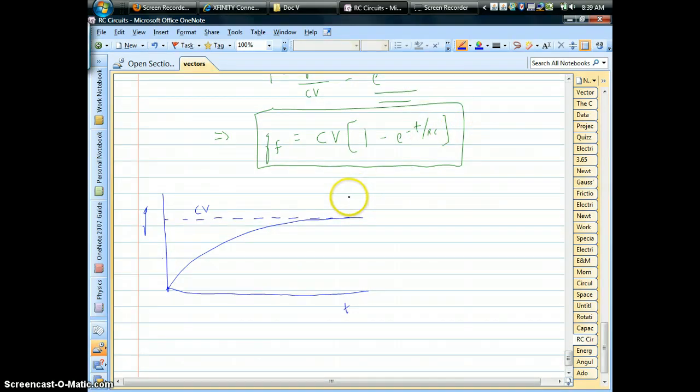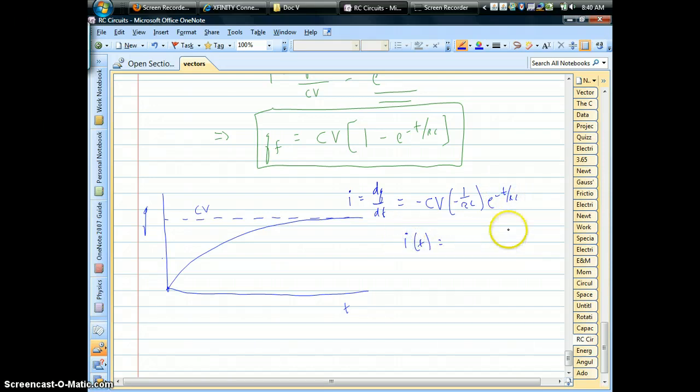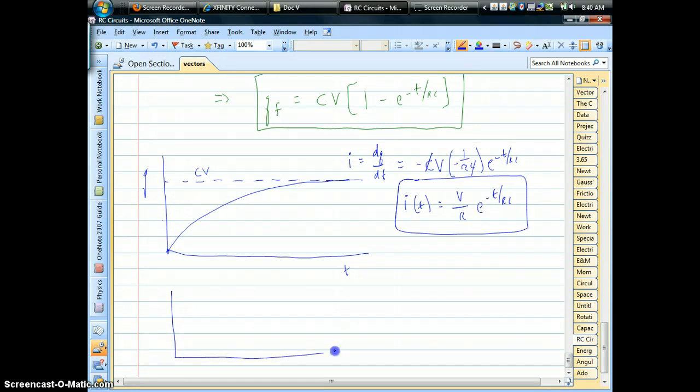Speaking of current, we can derivatize this charge solution that we just got. The first term is constant, so that drops out. We're left with negative CV. A factor of negative one over RC comes down, and we have our exponential. So our current as a function of time is, when the C's drop out, V over R, and it's Ohm's law, but then it's exponential. What that shows is, as the charge increases on the capacitor, the current does the opposite. The current starts big, V over R, and it dies towards zero over time. It's exponential decay.